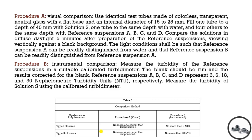For determination of turbidity of the closure solution, there are two methods: visual comparison and instrumental comparison. For visual comparison, we use identical test tubes made of colorless, transparent, neutral glass with a flat bottom and an internal diameter of 15 to 25 mm. We fill one tube to a depth of 40 mm with solution S, which has already been prepared.